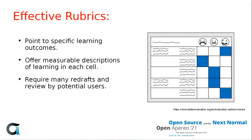Effective rubrics point to specific learning outcomes — nailing down exactly what is to be learned and offering a measurable description of that learning in each cell of the rubric. Effective rubrics also require many redrafts and review by potential users in order to be completely usable for your purpose.